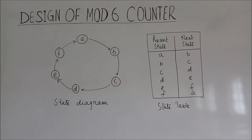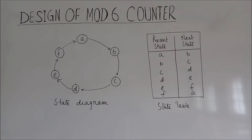From the state diagram we draw the state table. The state table consists of present state and next state. When the present state is a, the next state is b. When b, next is c. When c, next is d. When d, next is e. When e, next is f. And when f, the next state is a.